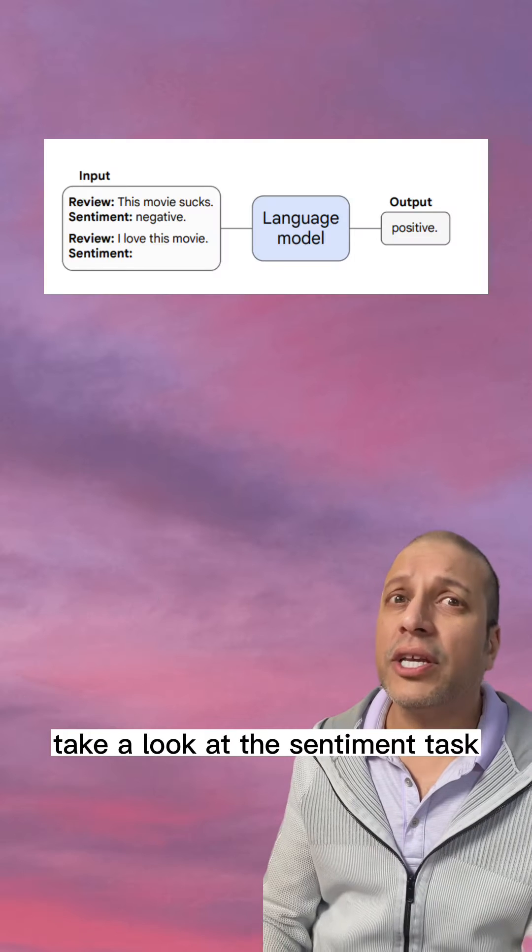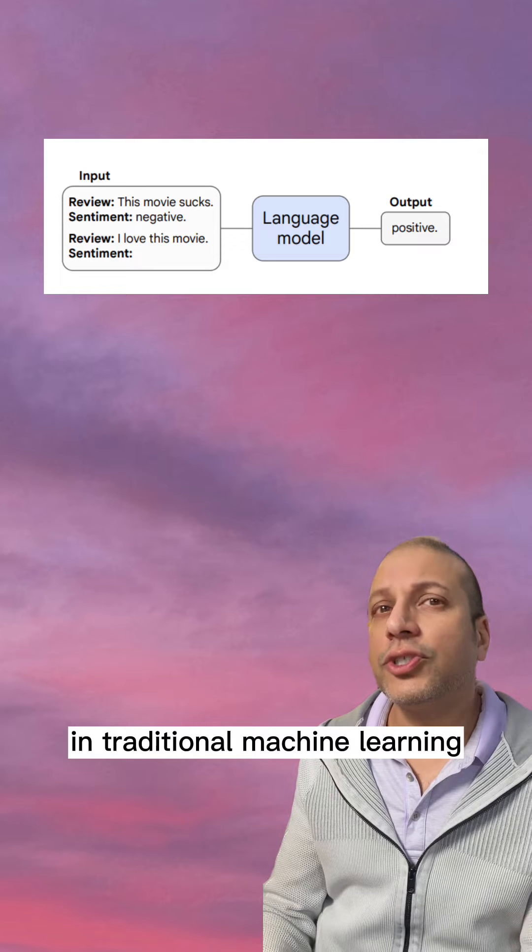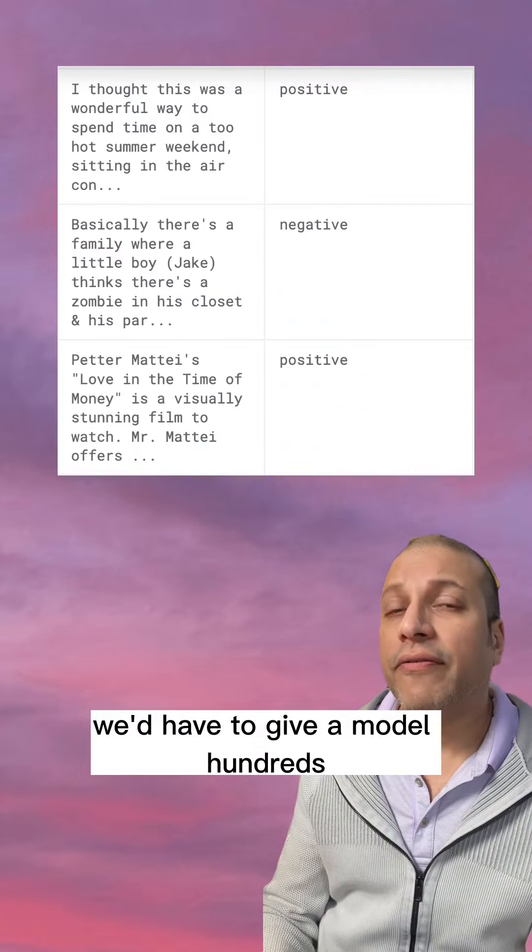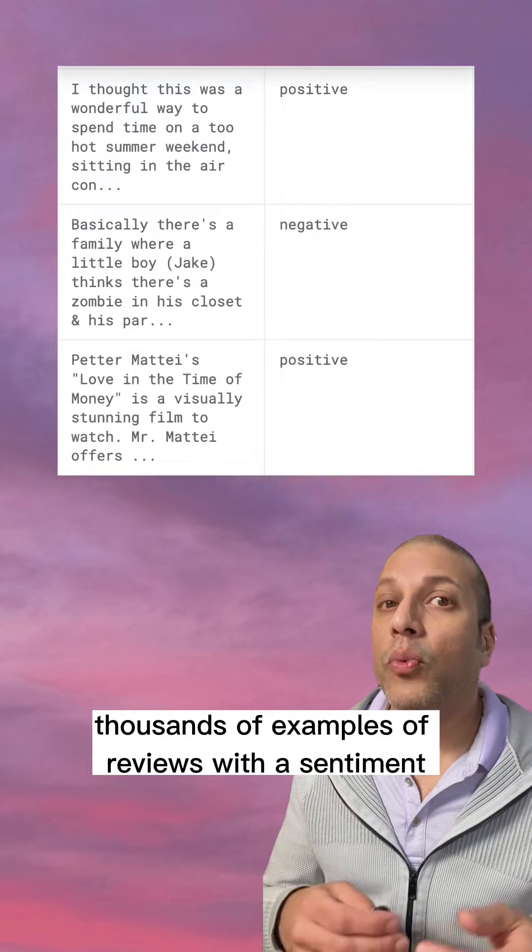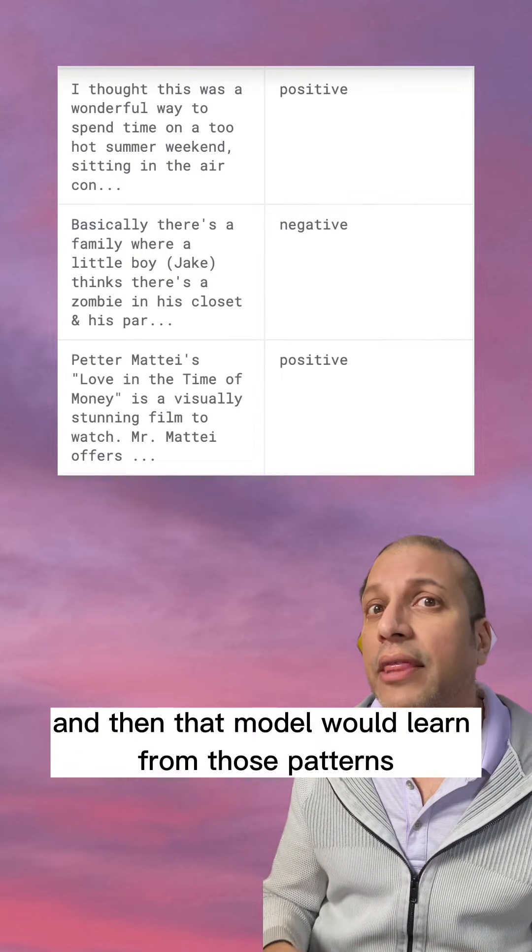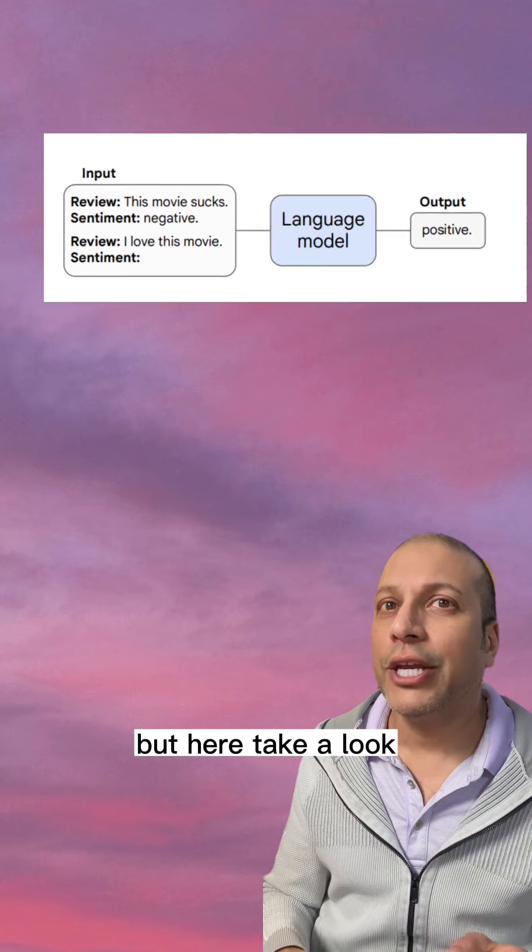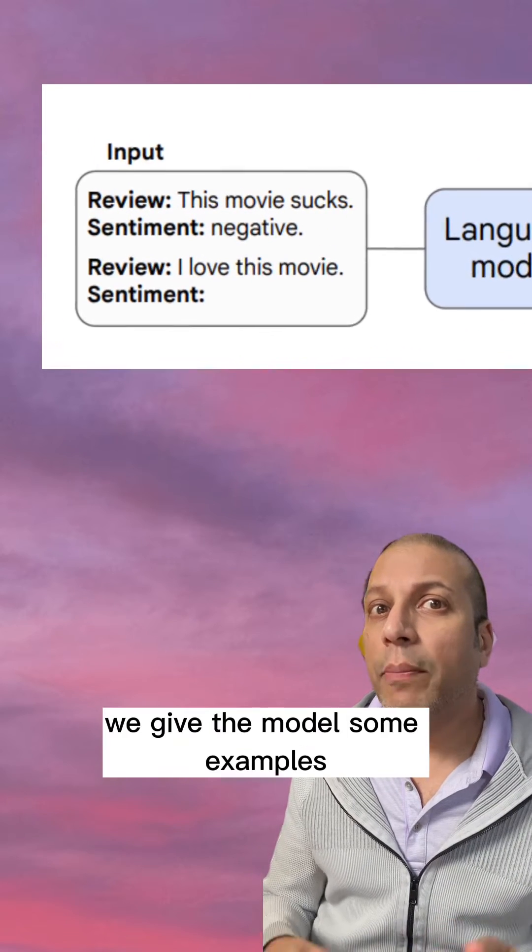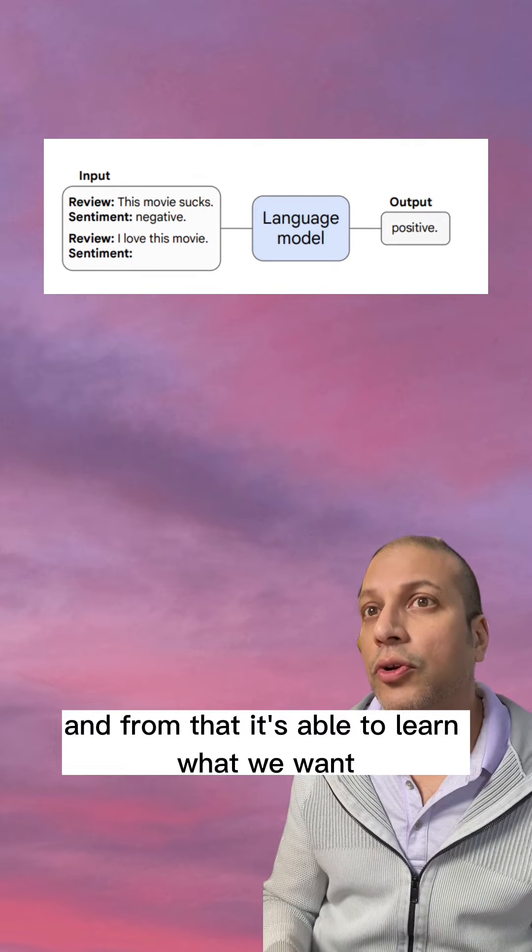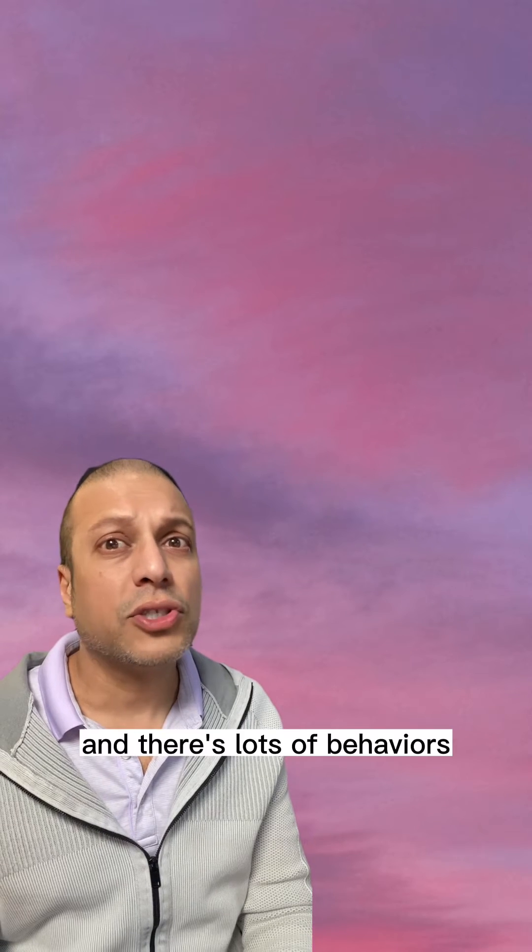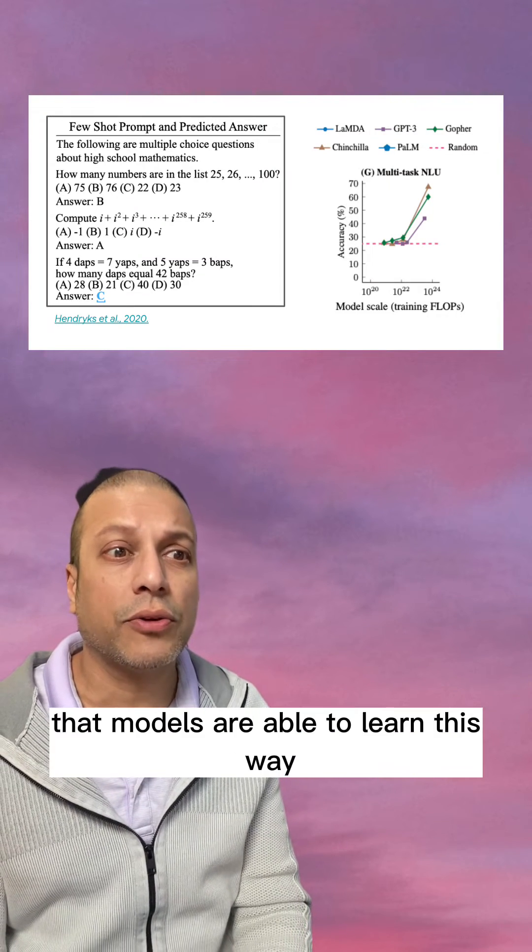Take a look at the sentiment task. In traditional machine learning, we'd have to give a model hundreds, thousands of examples of reviews with the sentiment, and then that model would learn from those patterns. But here, take a look. We give the model some examples, and from that, it's able to learn what we want. Wow. And there's lots of behaviors that models are able to learn this way.